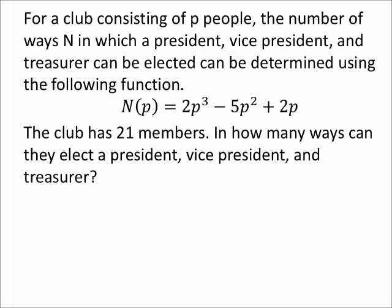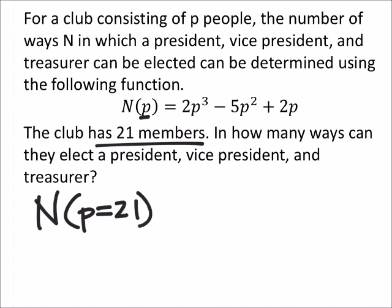The club has 21 members. In how many ways can they elect a president, vice president, and treasurer? Since it tells us that the club has 21 members, that's the number of people. So it's really just asking us to solve for N of p, but p in this case is 21.